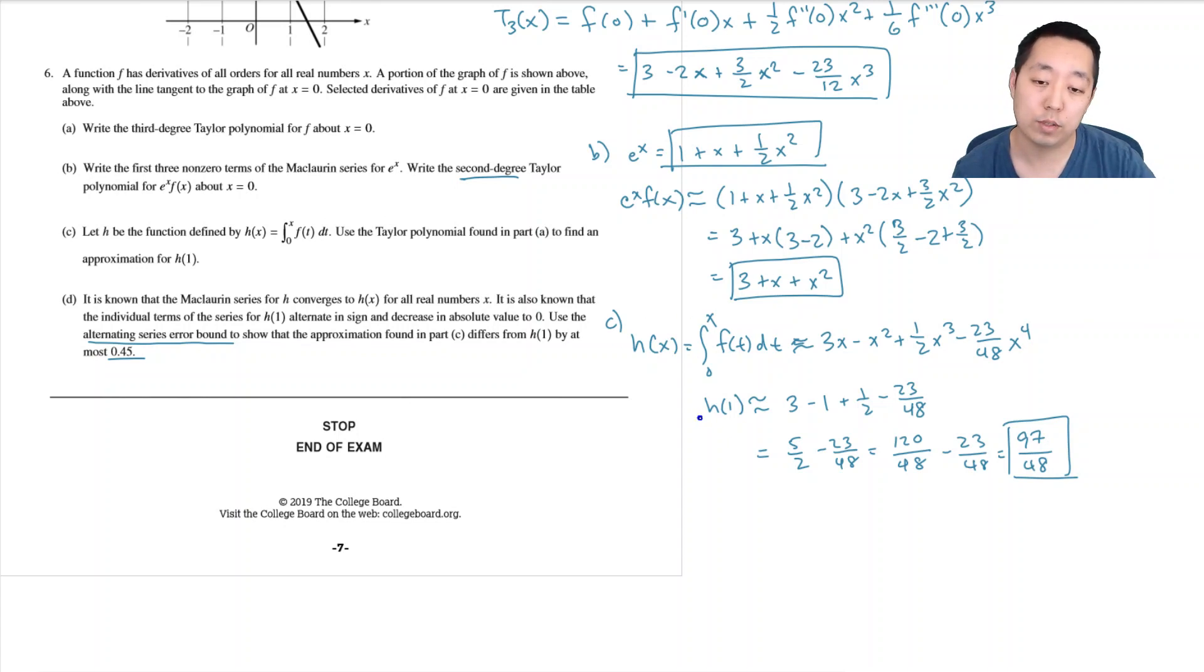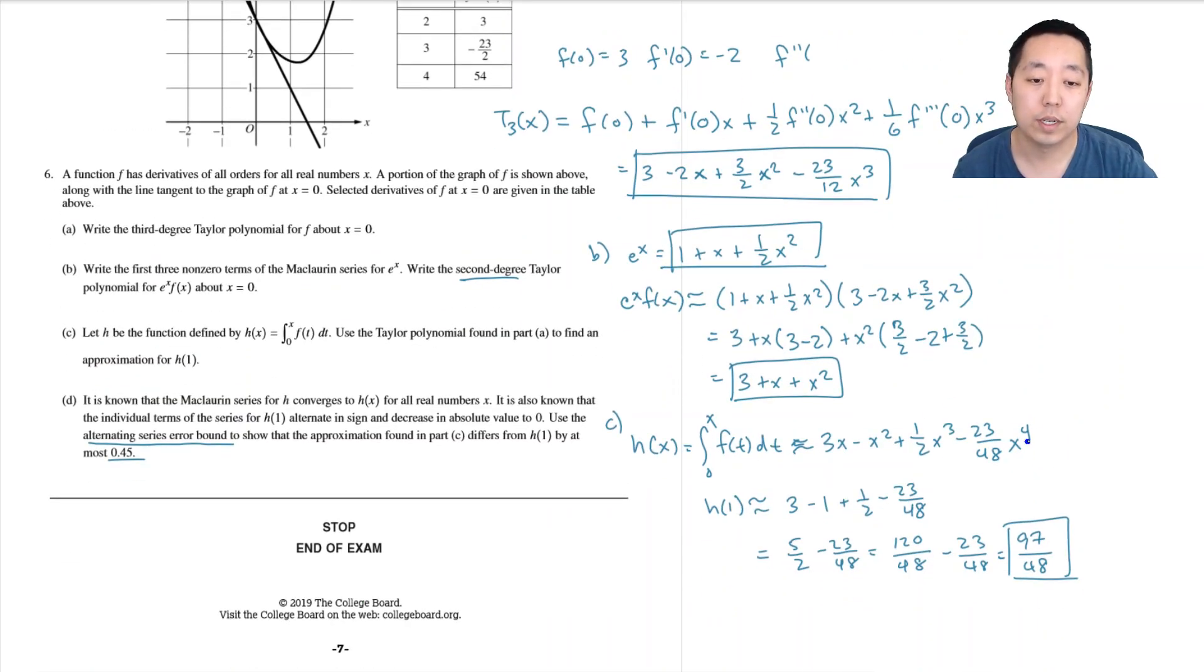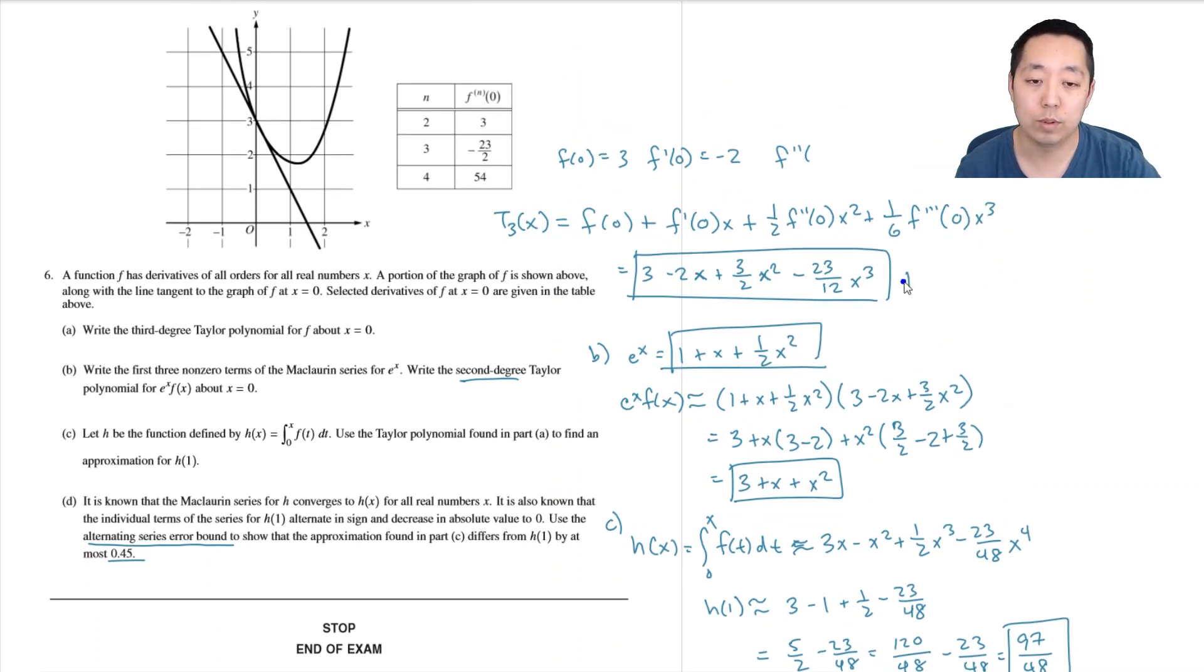For an alternating series, the error bound is bounded by the next value in the series. What's the next value in this term? I used all of these already, so I need to look at the next term, the fourth degree term here. What would the next term have been? It would have been one twenty-fourth times f''''(0) times x to the fourth. And this portion equals one over 24 times 54, given here, times x to the fourth.